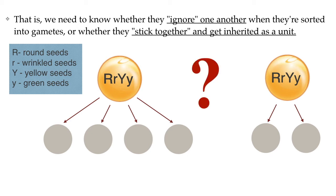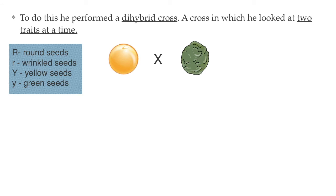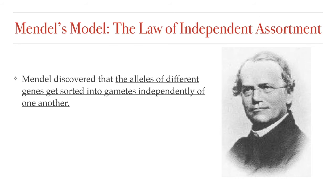That is, whether the genes ignore one another when they are assorted into gametes. For example, do the genes for seed shape — either round or wrinkled — and the genes for seed color — either yellow or green — move into gametes without influencing each other? Or do they stick together and get inherited as a unit? To answer this question, Mendel performed another set of experiments looking at two traits at a time, testing the inheritance of seed shape and seed color simultaneously. From these experiments, he concluded that the alleles for two different genes get sorted into gametes independently of one another — the allele a gamete received from one gene does not influence the allele received for another gene. He called this the law of independent assortment.